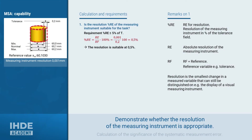Let's start by proving that the resolution of the measuring instrument is suitable for the task. Percent RE is the resolution as a percentage of the tolerance field of the product characteristic, and it should be less than or equal to 5%. It is calculated as the quotient of the absolute resolution RE divided by the tolerance. With a measuring instrument resolution of 0.001 mm and a tolerance of 0.2 mm, a value of 0.5% is calculated — meaning the resolution is suitable for the task.